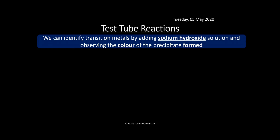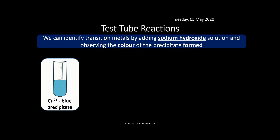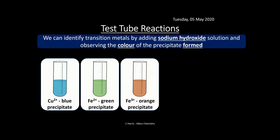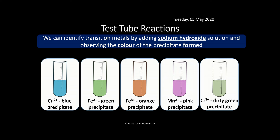Transition metals can be identified by adding sodium hydroxide solution and observing the colour of the precipitate formed. Cu²⁺ gives a pale blue precipitate; Fe²⁺ gives a green precipitate; Fe³⁺ gives an orange-yellow precipitate; Mn²⁺ gives a pink precipitate; Cr³⁺ gives a dirty green precipitate. These are really important - you need to know the colours and how to test for transition metal ions.